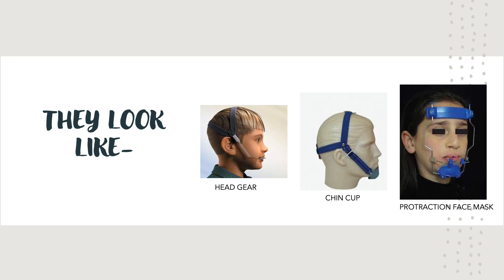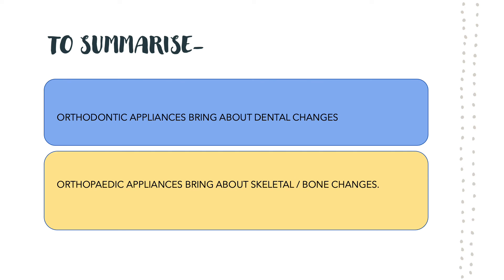To summarize: orthodontic appliances bring about exclusively dental changes — though some do bring about minor bone changes as well — while orthopedic appliances largely bring about skeletal or bone changes. These are terms that tend to confuse patients when going ahead with a treatment protocol, so I thought this would help patients make a proper decision if they understand what is being told to them. Take care for now, thank you.